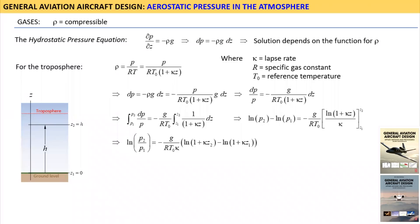The pressure at ground level is denoted by P0; it is the atmospheric pressure at sea level. The pressure at elevation H is the pressure of interest. So let's substitute P for P2, P0 for P1, H for Z2, and 0 for Z1.